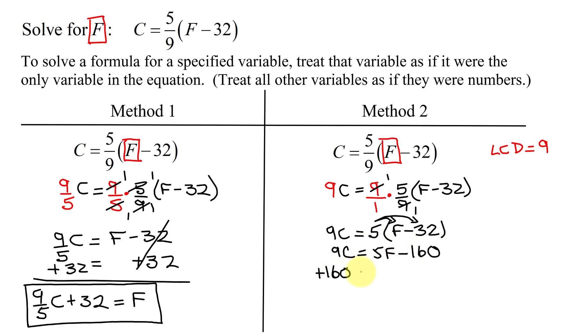Unlike terms on the left-hand side, I can't combine. 9C plus 160 equals 5F, and then negative 160 plus 160 is 0. So finally, to get F by itself, all I have to do is divide both sides by 5.